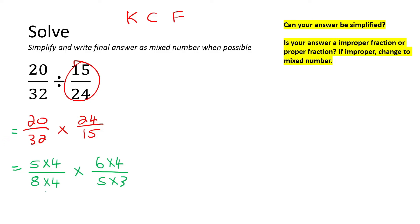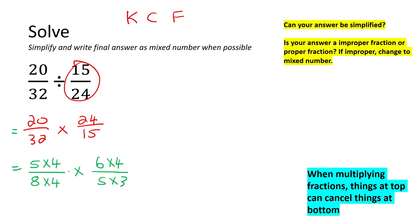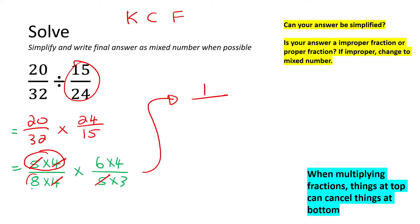The reason is that when we are multiplying fractions, any number at the top can cancel with any number at the bottom. So for example we could cancel this 5 and this 5, and then this 4 and this 4. Let's write down what we have now. At the top there's nothing, so put a 1, then we have an 8. At the bottom we still have 6 times 4, and then over here we still have 3.